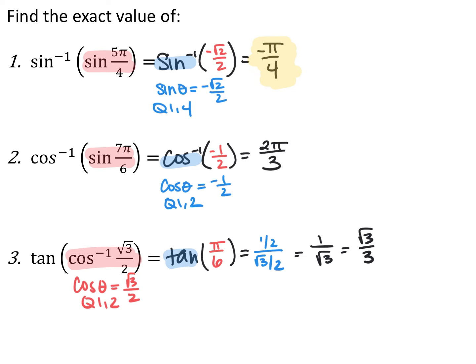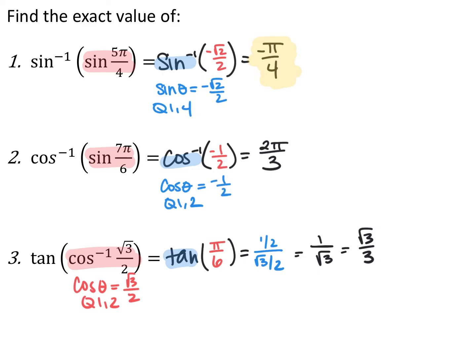For the next one, cosine inverse of the sine of seven pi over six. These aren't the same trig functions, so they won't cancel. My final answer is an angle measurement because I have inverse trig on the outside. The sine of seven pi over six is negative one-half. Then I take the cosine inverse of negative one-half — where does cosine equal negative one-half in quadrants one and two? In the second quadrant, giving two pi over three.